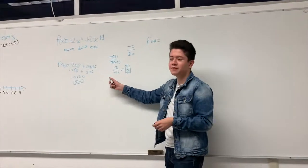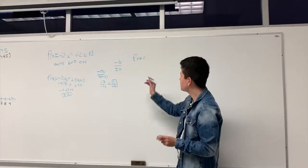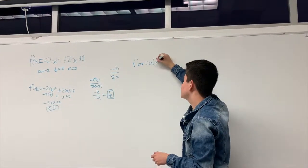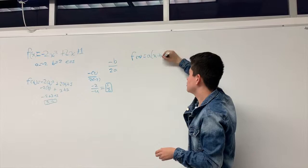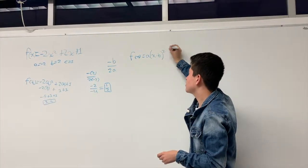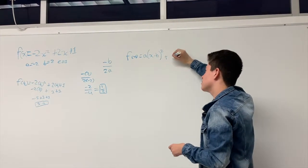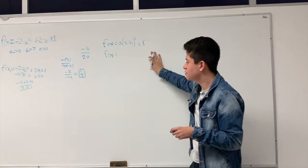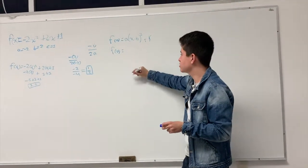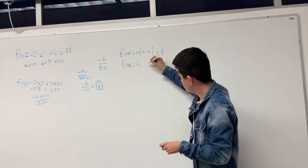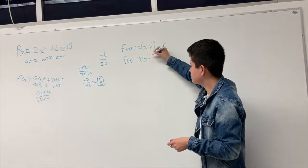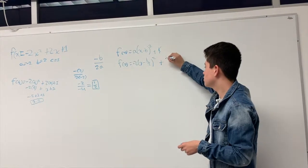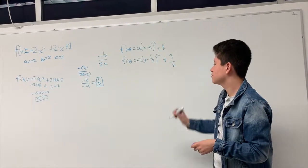Now with these numbers we can find the vertex form. The vertex form is f(x) equals a times (x minus h) squared plus k. We put in the numbers: f(x) equals negative 2 times (x minus one half) squared plus three halves.